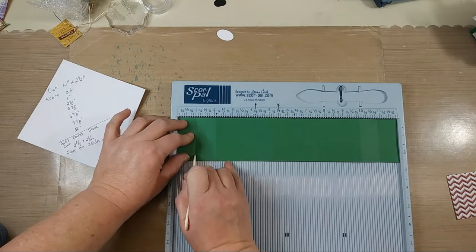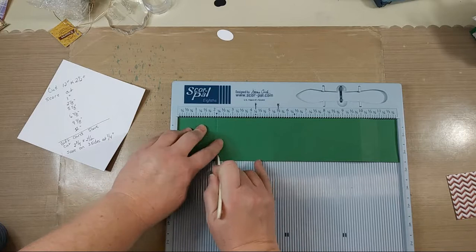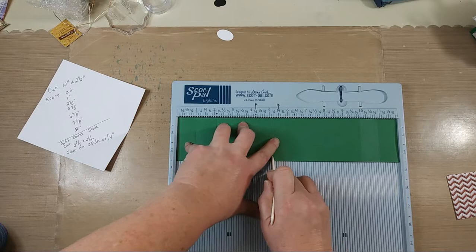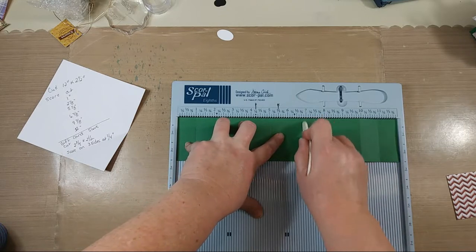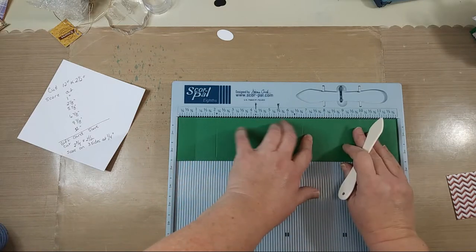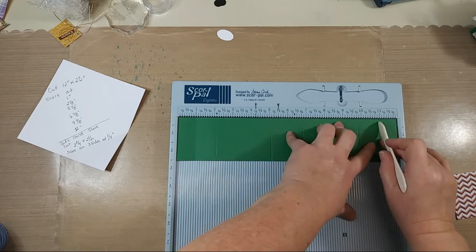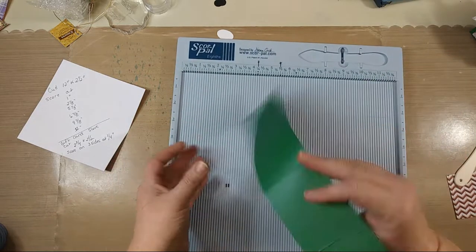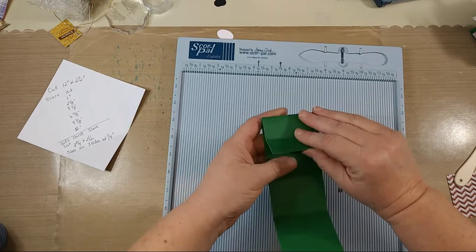the 2-1/8, 5-1/8, 6-7/8, 9-7/8, and at 11. So, now this will give us a base and sides and a little bit at the top. And that will form our little holder. So I like this little holder because it just, it gives the gift a little bit more substance.